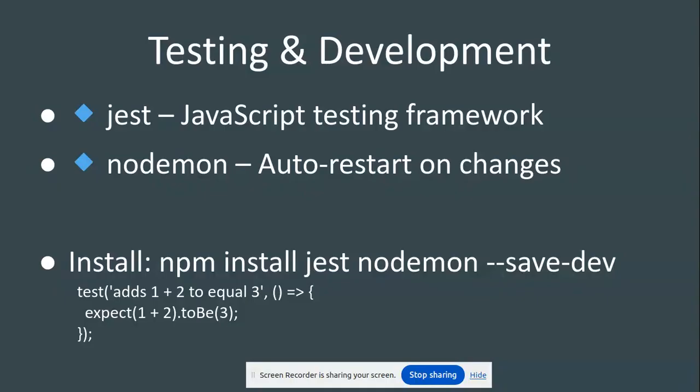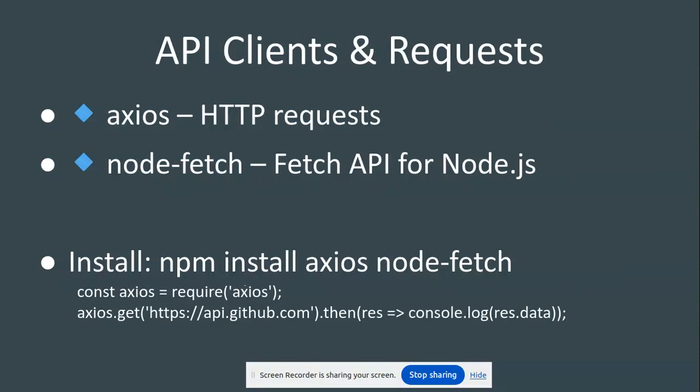If you want to restart the Node server automatically without doing Ctrl+C and running node app.js again every time, you will use Nodemon. Whenever there is a change detected in your project, Nodemon automatically restarts the server, so you don't need to go to the terminal and restart manually.